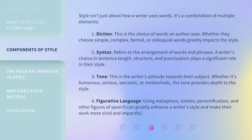Style isn't just about how a writer uses words — it's a combination of multiple elements. 1. Diction: This is the choice of words an author uses. Whether they choose simple, complex, formal, or colloquial words greatly impacts the style. 2. Syntax: Refers to the arrangement of words and phrases. A writer's choice in sentence length, structure, and punctuation plays a significant role in their style.